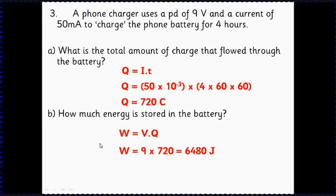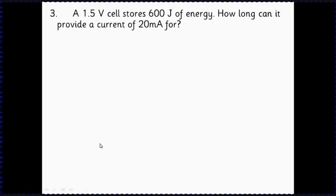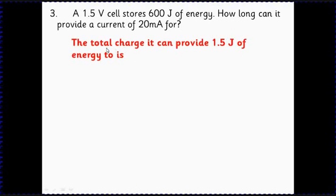And question four, I should say. So one 1.5 volt cell stores 600 joules of energy. How long can it provide a current of 20 milliamps for? Just a little bit more tricky here to think about the equations. So we've got the total charge it can provide - 1.5 joules of energy because that's what this means. Every coulomb of charge goes out with 1.5 joules, we've got 600 joules.